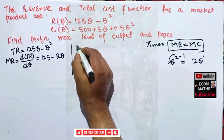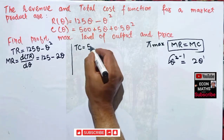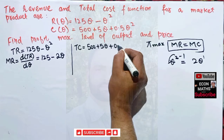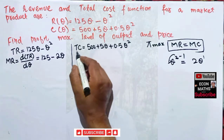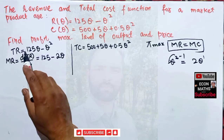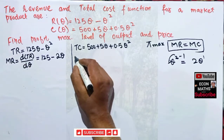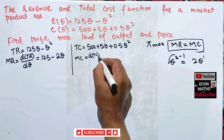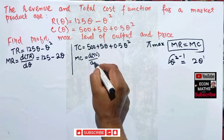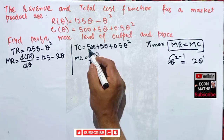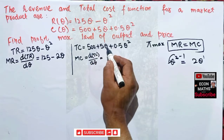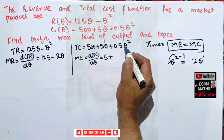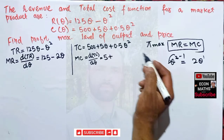Similarly, the total cost function is TC = 500 plus 5Q plus 0.5Q squared. Marginal cost is the first derivative of total cost with respect to quantity. The derivative of the constant 500 is 0, and the derivative of 5Q gives 5. For the 0.5Q squared term, the derivative of Q squared is 2Q, so we get 2 times 0.5.